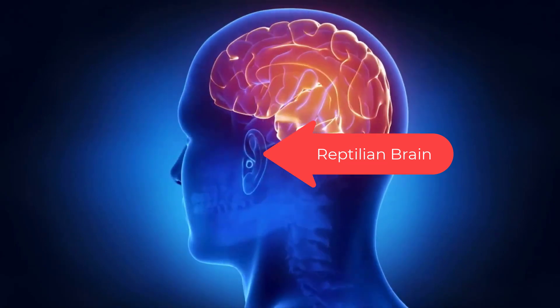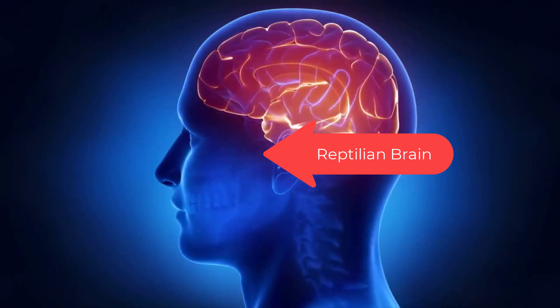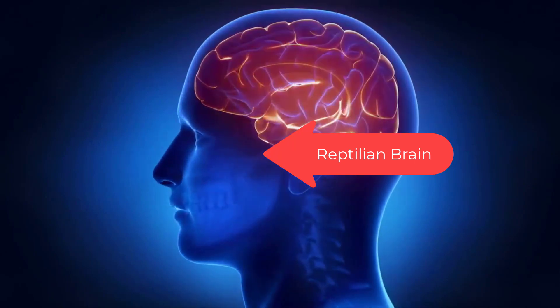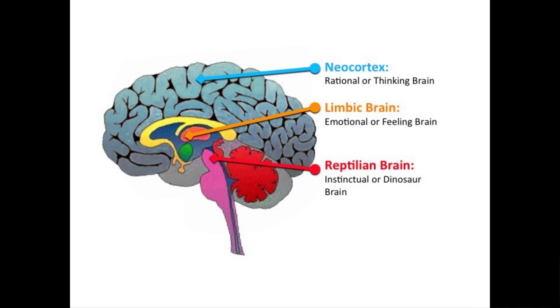The old brain, the reptilian brain — it decides. It can take into account the input from the other brains, but it can also decide faster than the blink of an eye, then use the other brains to justify the decision. The reptilian brain is visual and hardwired into the brain stem.